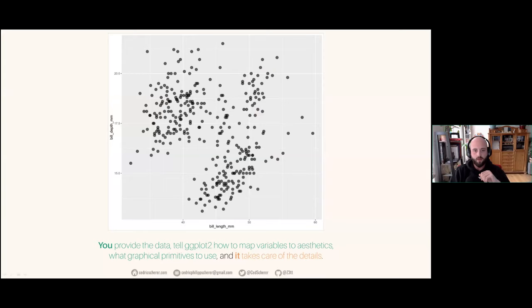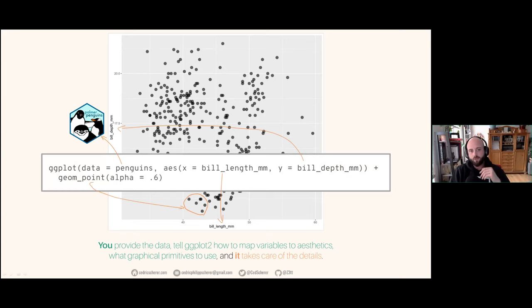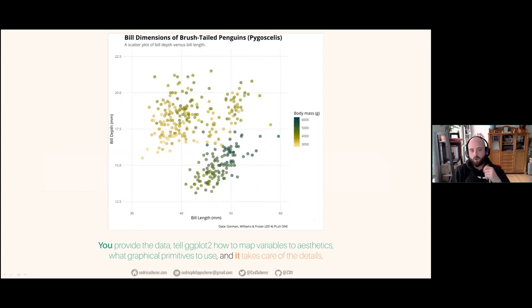This grayish ggplot is a simple plot you can create with two lines of code. First you specify data, then the x and y variables, and then the geometry, which are points here. We add some transparency with the alpha argument to the points to avoid over-plotting — to make visible that there are several points on top of each other.